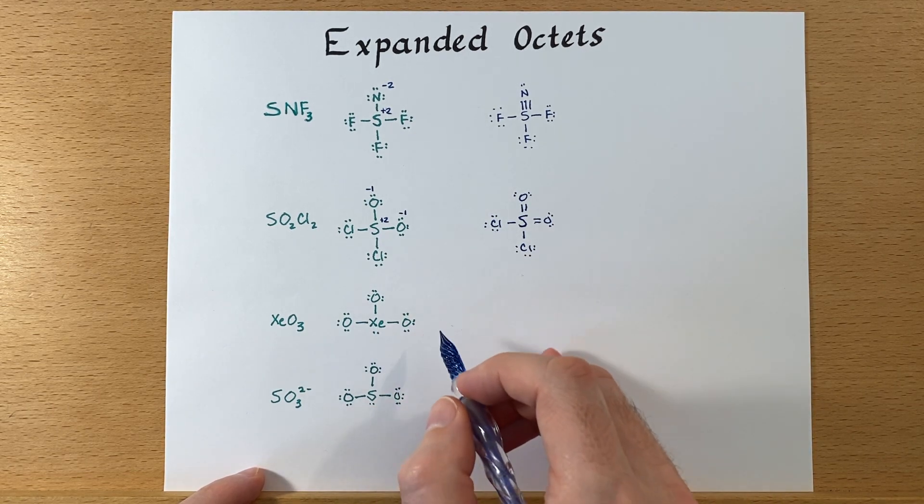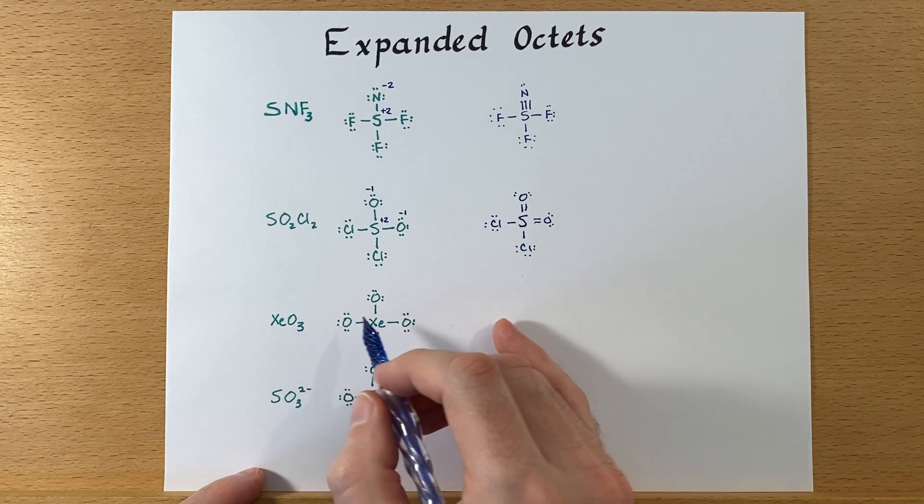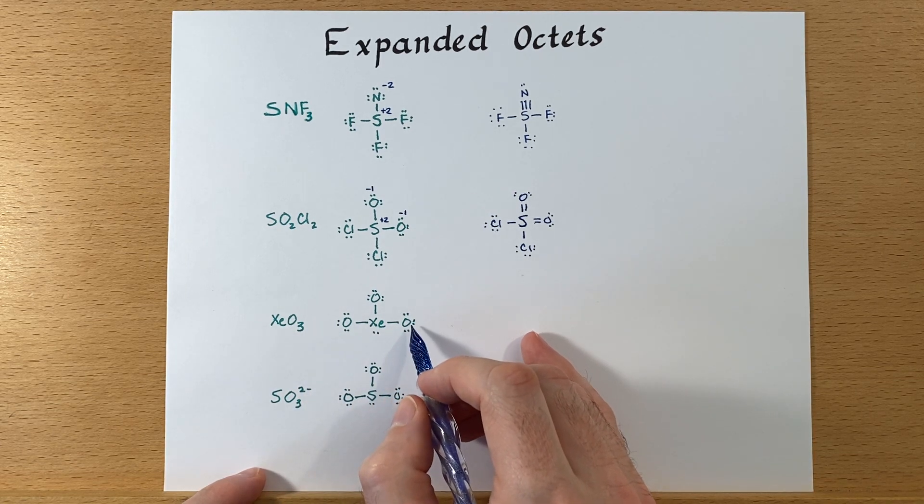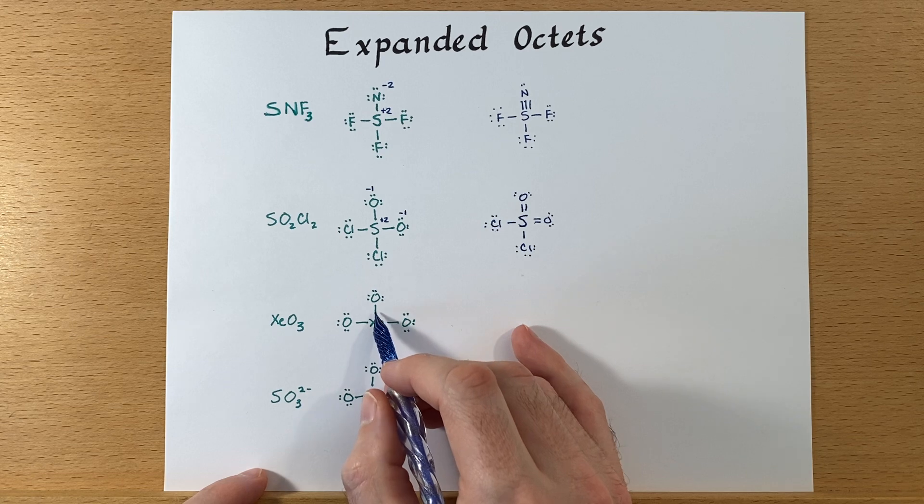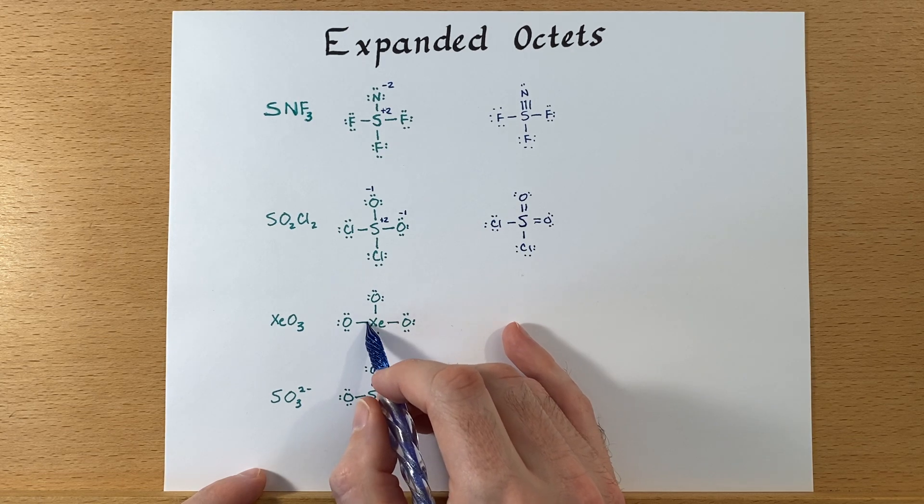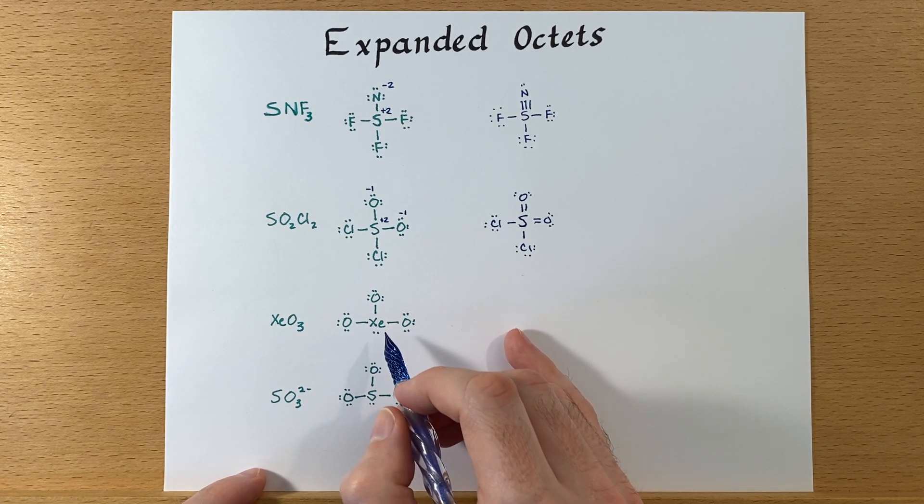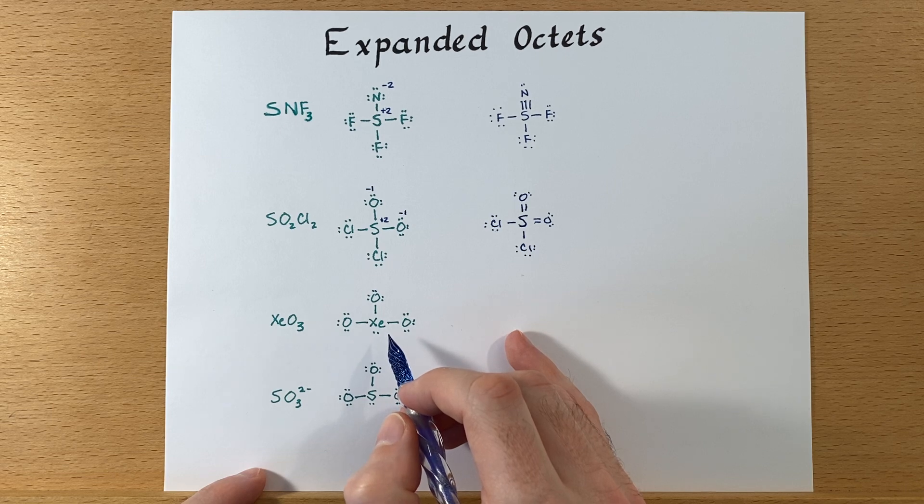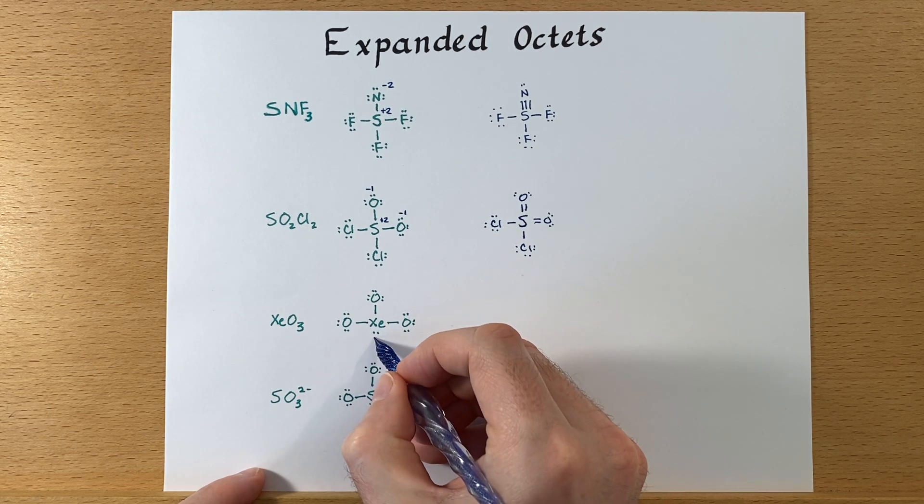Let's do the same for this next one, xenon trioxide. One, two, three, four, five. Now xenon starts with eight and it has five now, so this is a plus three.